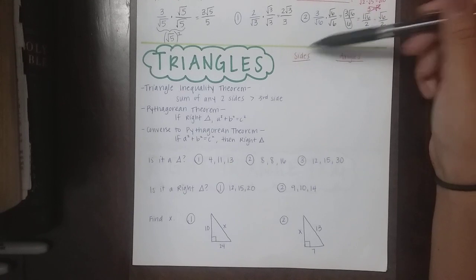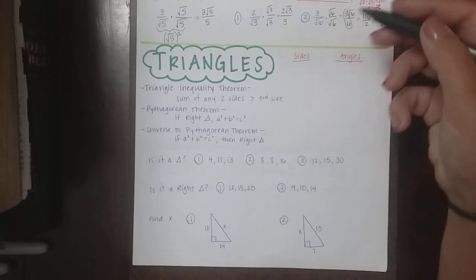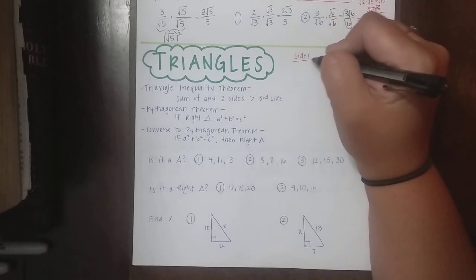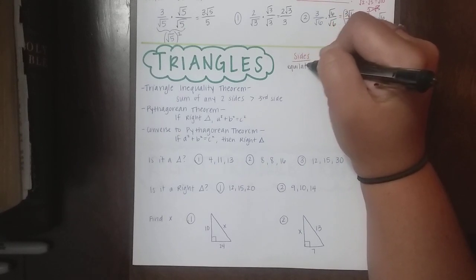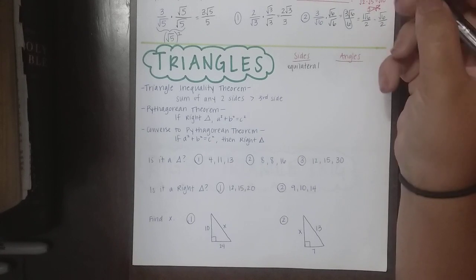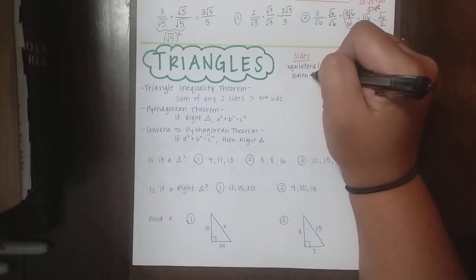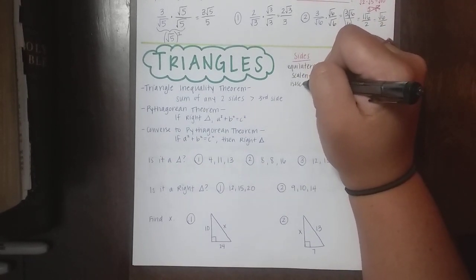We can name triangles based on sides and on angles. So if I want to name a triangle based on its sides, I'm talking about congruent sides. If all three sides are congruent, we call that an equilateral triangle. If all three sides are not congruent, they're all different, we call that scalene. And then if only two of the sides are congruent, we call that isosceles.